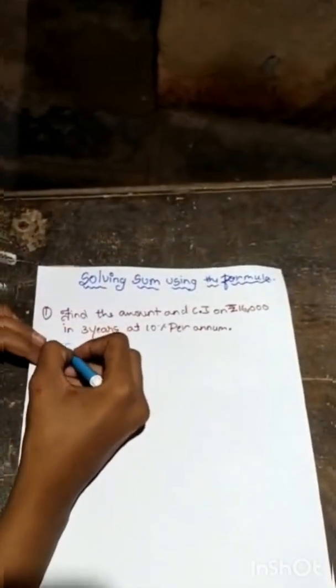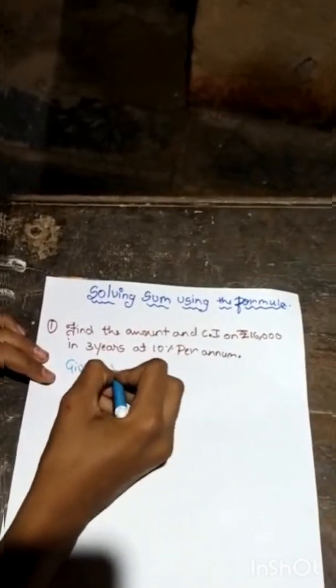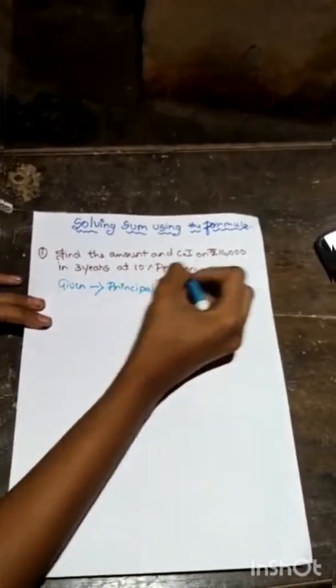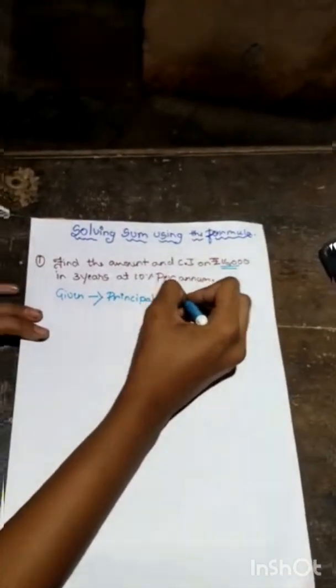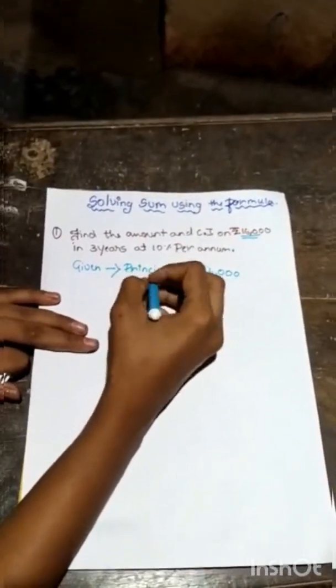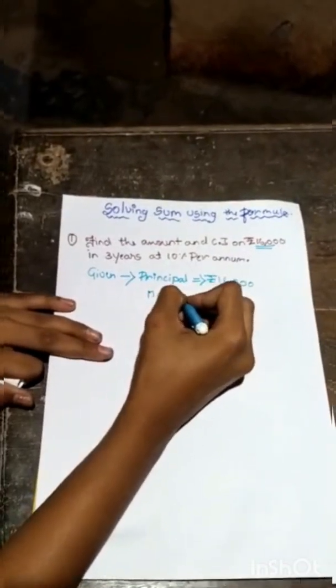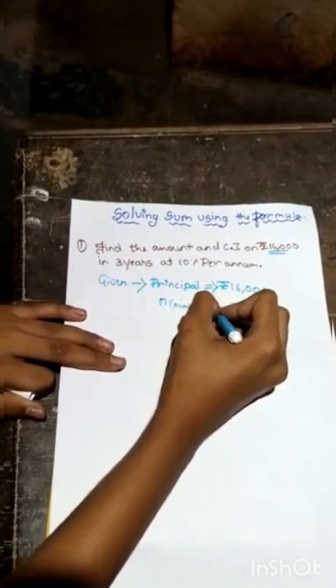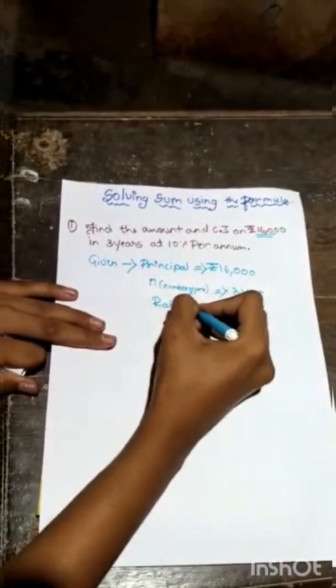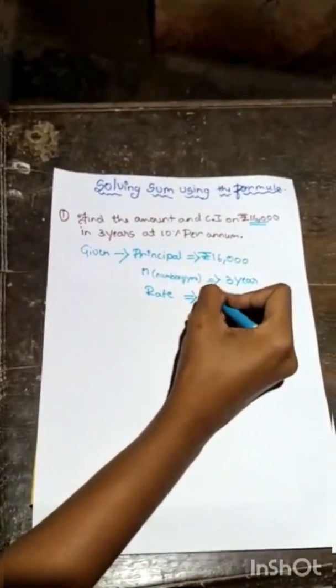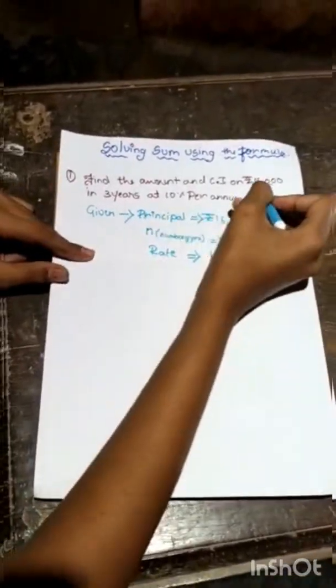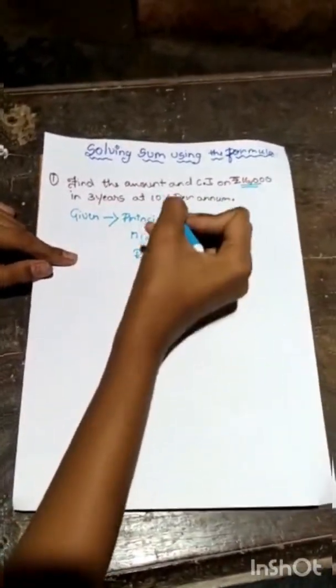Now, here, the given values are: principal, what is principal? Principal is 16,000. Number of years N is 3 years. And rate, rate is 10%. Here, principle is 16,000, number of years is 3 years, rate is 10%.